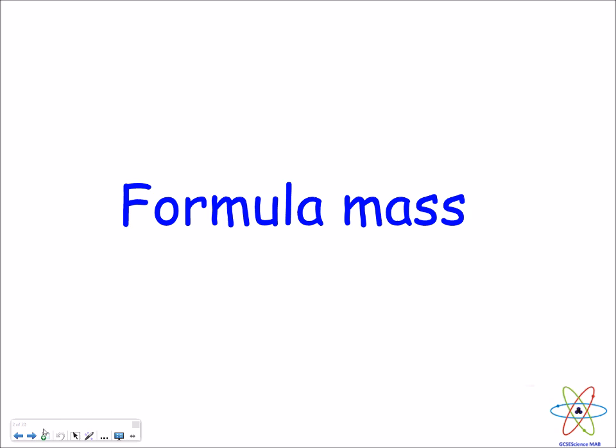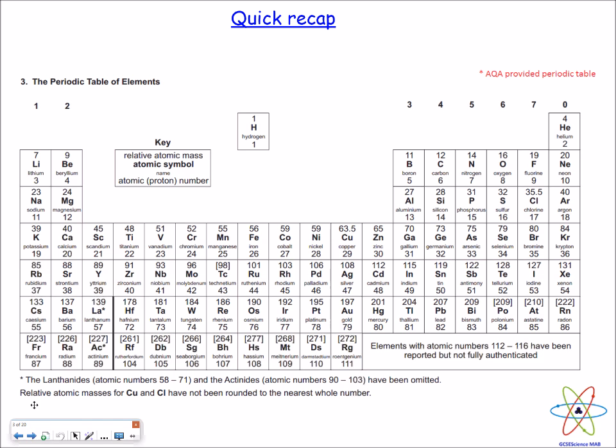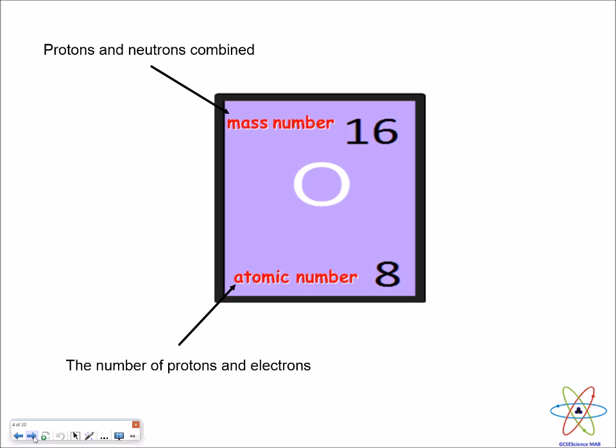We're going to start off with formula mass, and before we do that we need to look at a periodic table. You'll notice that every single element has two numbers attached to its symbol. Let's look at oxygen in group 6—it has the numbers 16 and 8. The biggest number is the mass number, so for oxygen it's 16. The smallest is the atomic number, which tells you the number of protons and electrons. However, the mass number tells you how heavy that atom is, and this is what we're going to use for calculating formula mass.